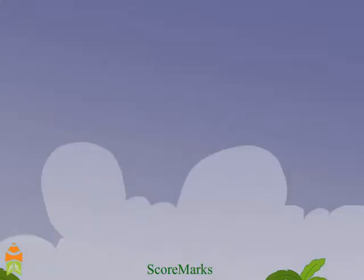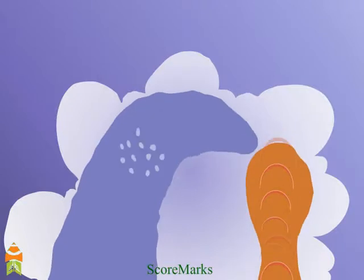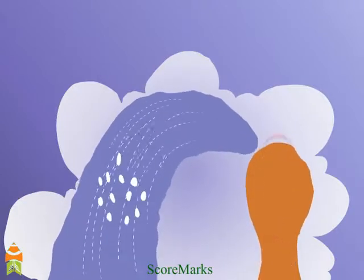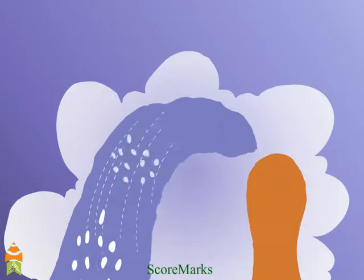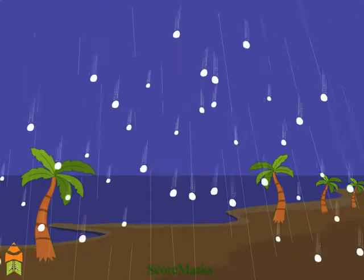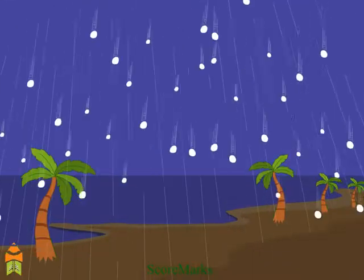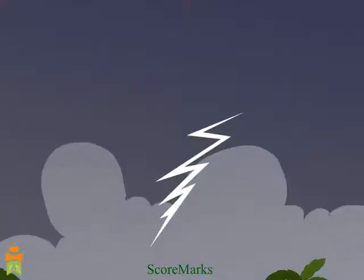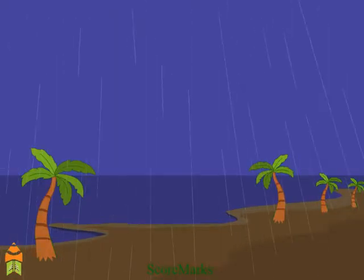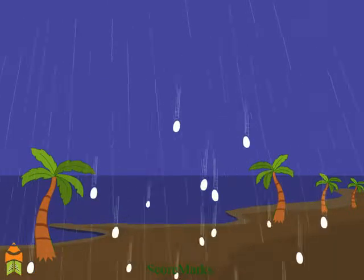When the thunder cloud forms completely, water and ice droplets come together and precipitation begins. Huge sparks are produced between clouds or between a cloud and the ground — this is the lightning we see. The loud booming sound produced is thunder, which results in heavy rainfall.